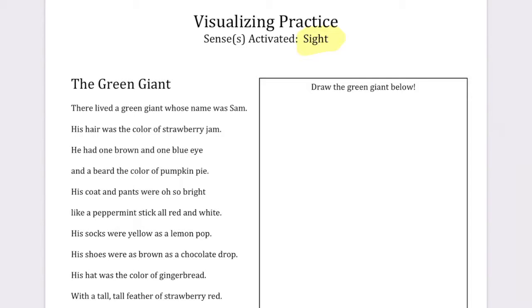His socks were yellow as a lemon pop. His shoes were as brown as a chocolate drop. His hat was the color of gingerbread with a tall, tall feather of strawberry red. So now what I want to do is go back and highlight the parts of this poem that show me a very clear picture in my mind of what this giant looks like.